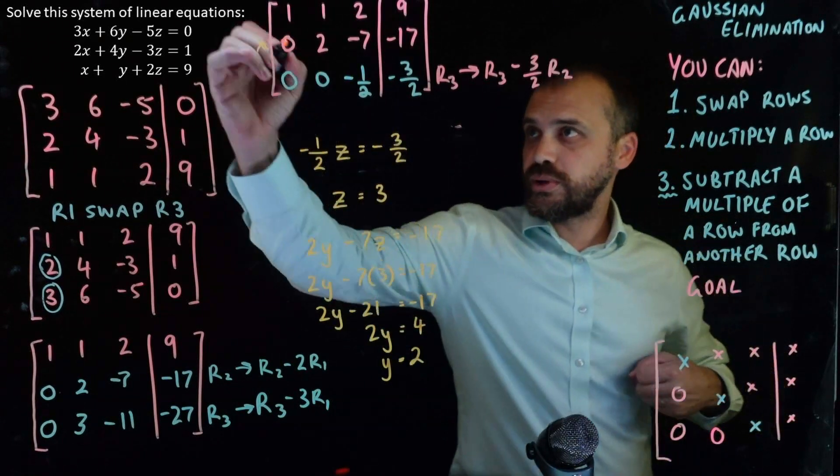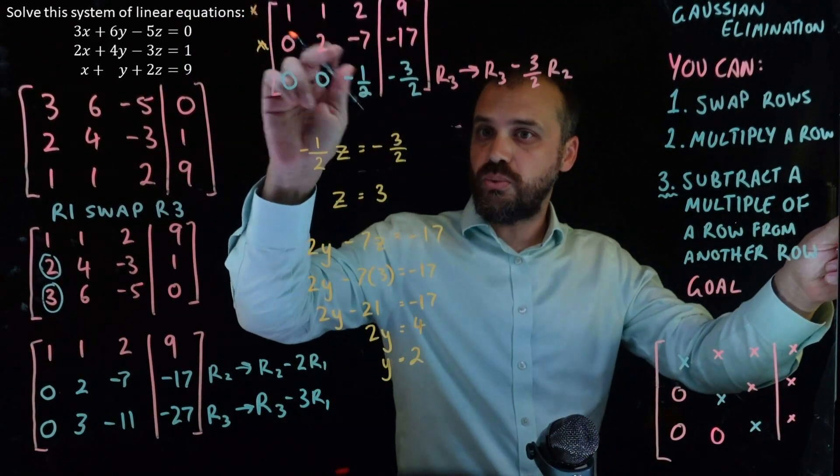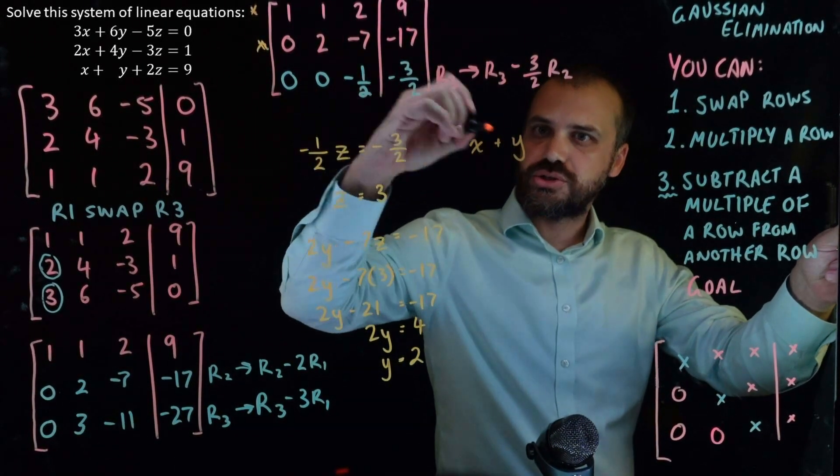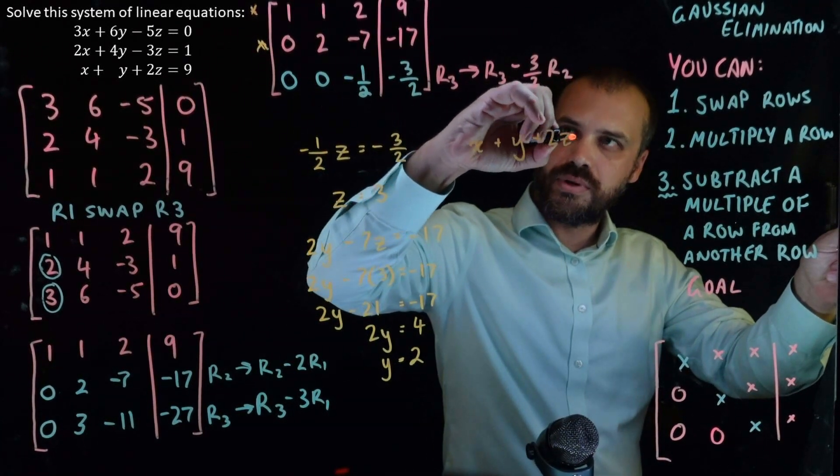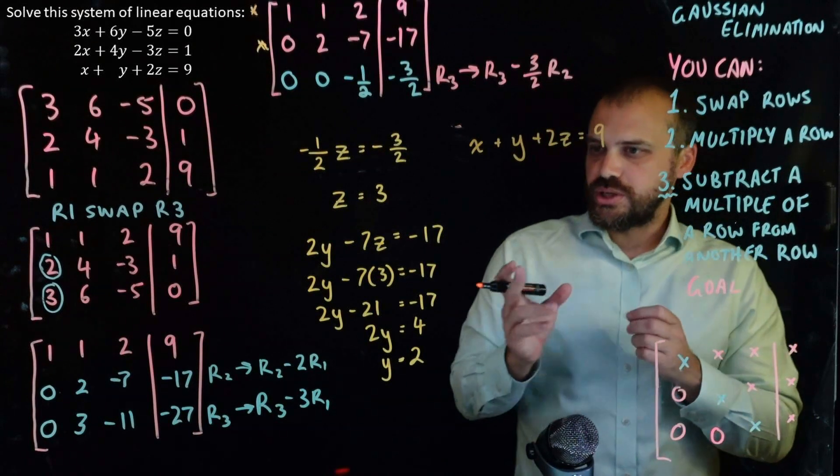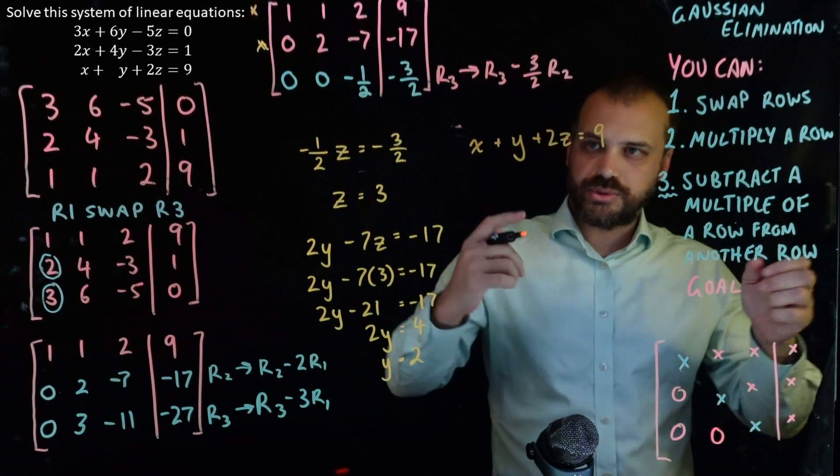And finally, we can look at this equation and rewrite it as 1x plus 1y plus 2z equals 9. And of course, we know that y equals 2, and we know that z equals 3. So,